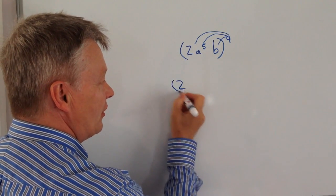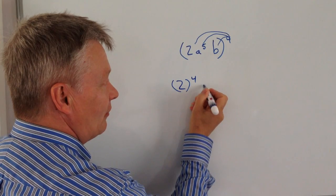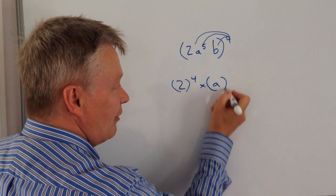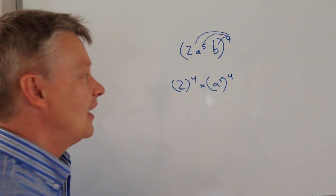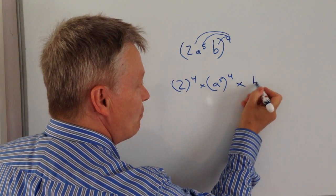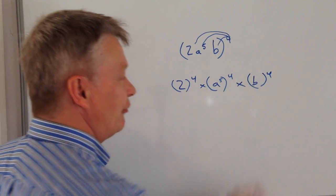So what we've got here is 2 to the power of 4, multiplied by a to the power of 5 to the power of 4, which is the middle term here, and then multiplied by b to the power of 4.